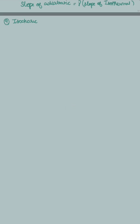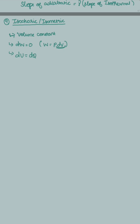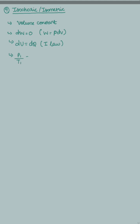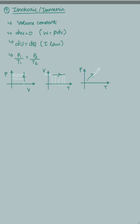Next is the isochoric process, also called the isometric process — 'choric' or 'metric' indicates volume, meaning volume is constant. Work done is zero, since W = P dV and volume is constant. Also, ΔU equals ΔQ. The corresponding gas law for the isochoric process is P1/T1 = P2/T2, which is Gay-Lussac's law. In the graphs, for different values of pressure, volume remains constant, and since P is directly proportional to T, it is a straight line with a positive slope.